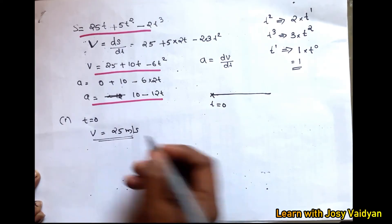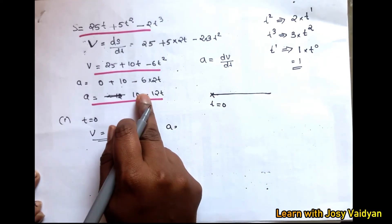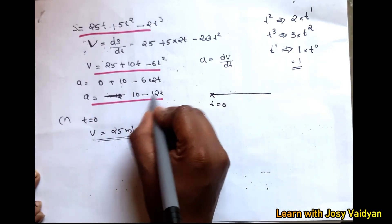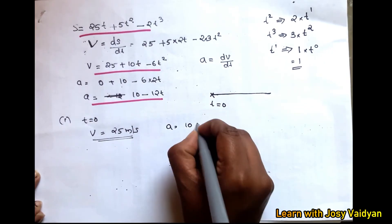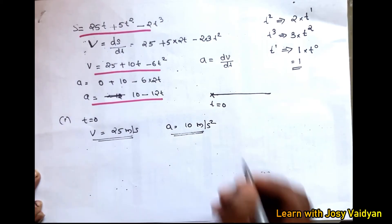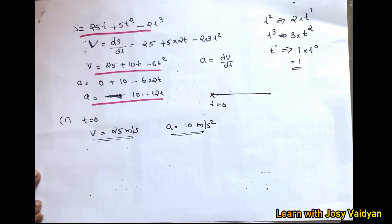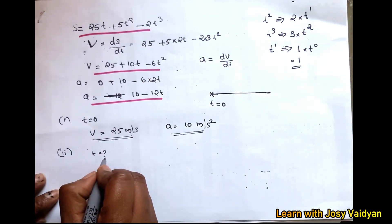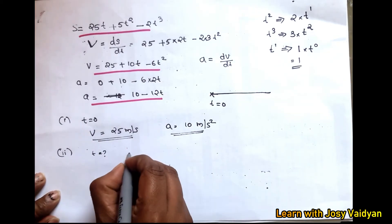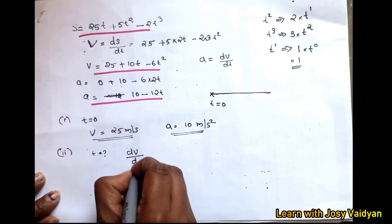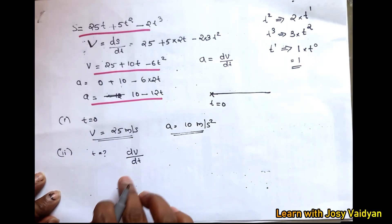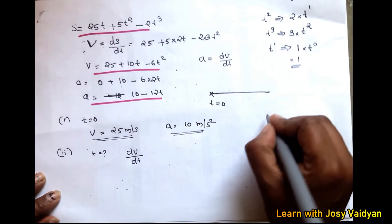For the second question, we find the time at which the particle reaches maximum velocity. Maximum velocity occurs when dv/dt equals zero. We already have the acceleration equation from differentiating the velocity. Setting the acceleration to zero gives us the time of maximum velocity.